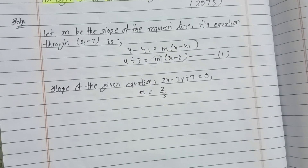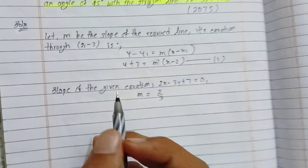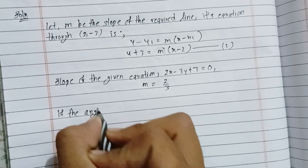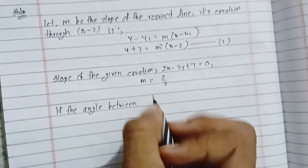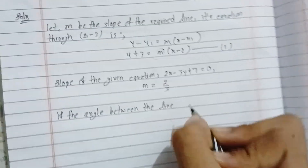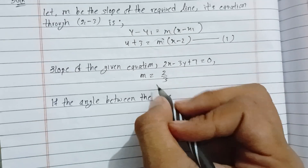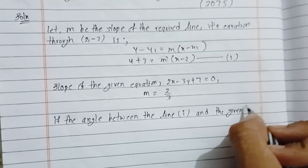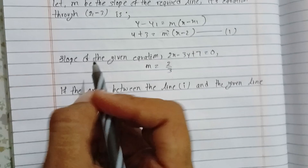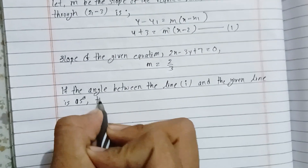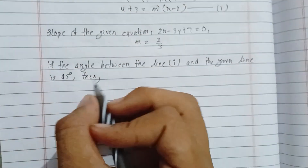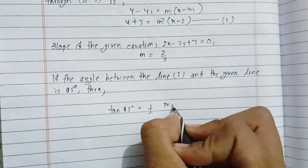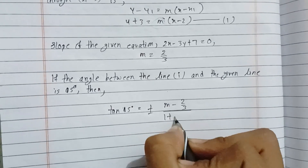Now, since the angle between the required line and the given line is 45 degrees, we apply the angle between two lines formula: tan(45°) equals plus or minus (m minus 2/3) divided by (1 plus m times 2/3).